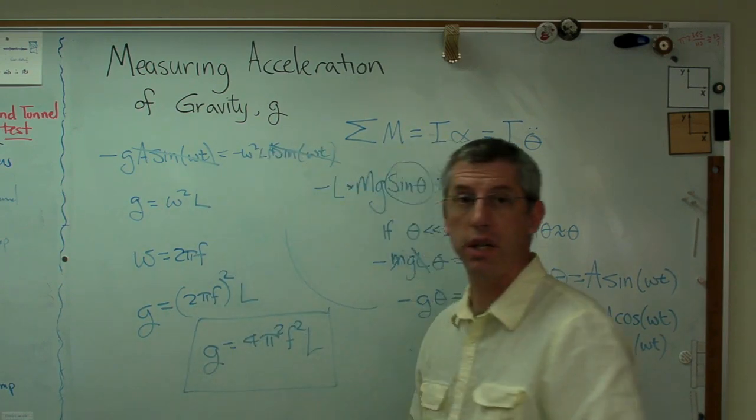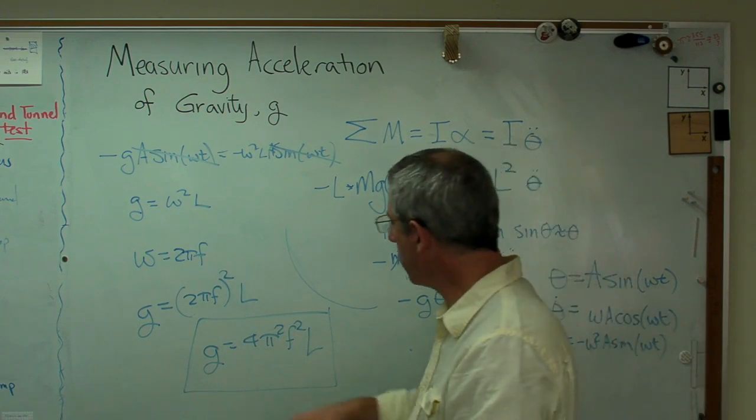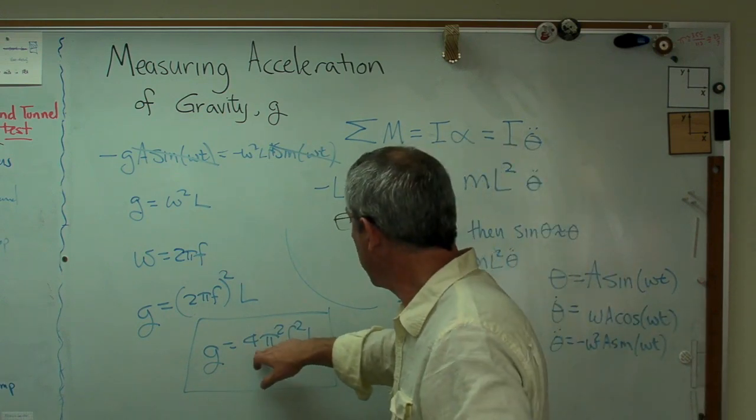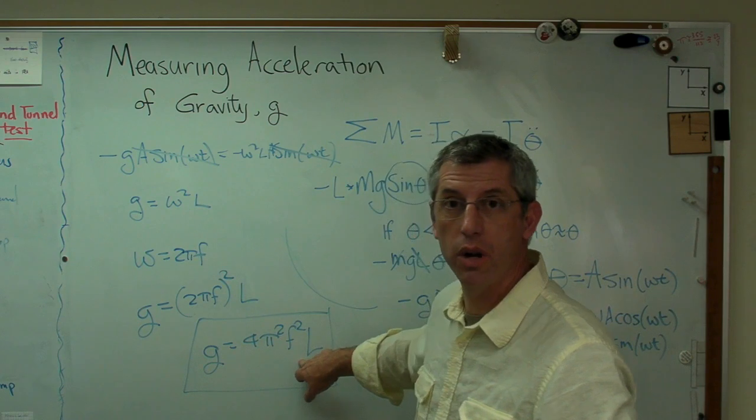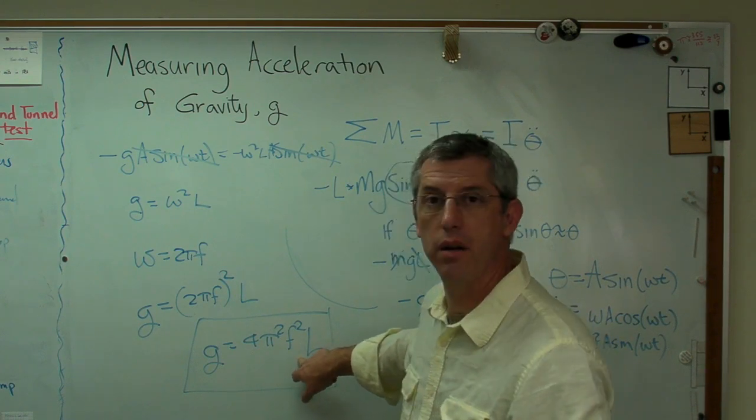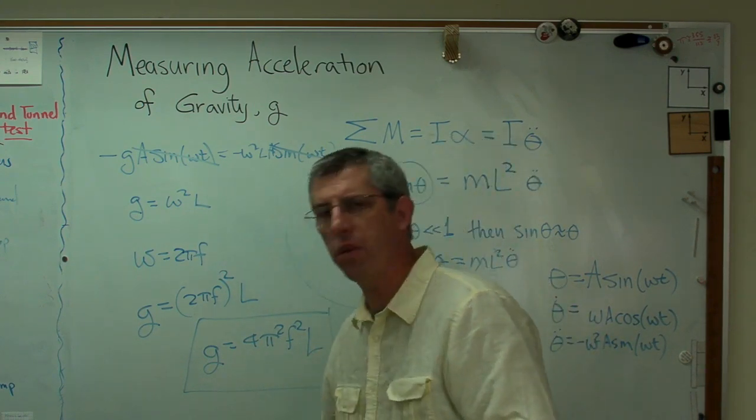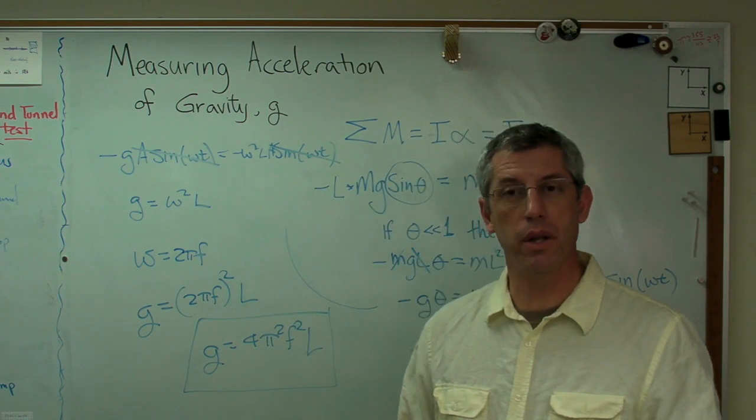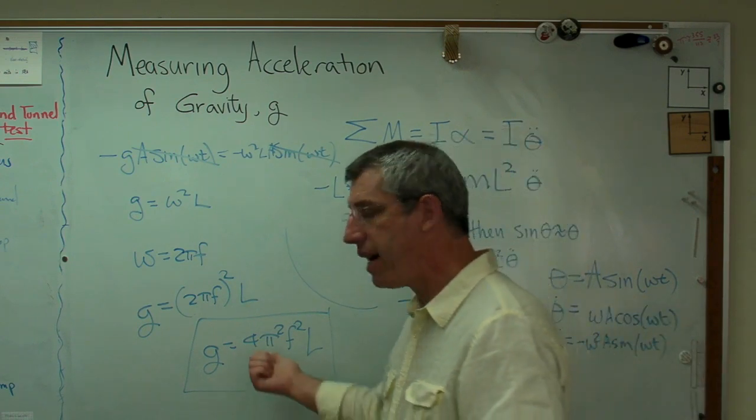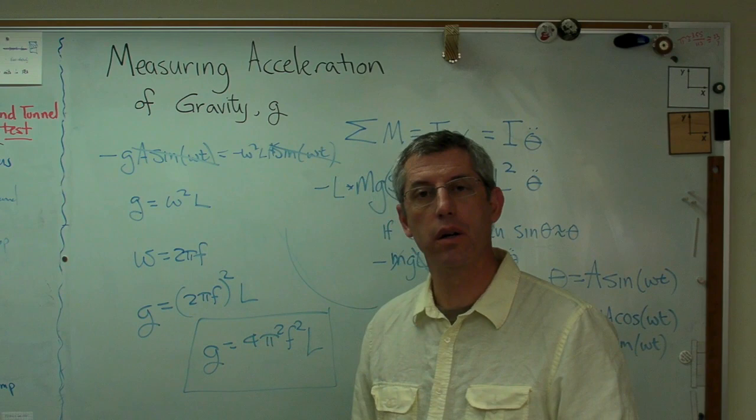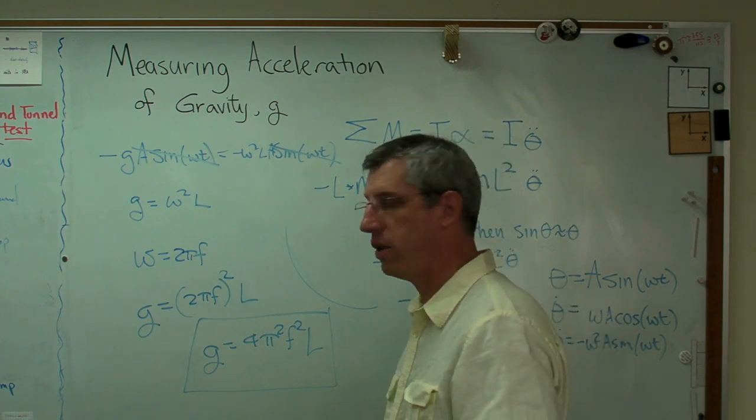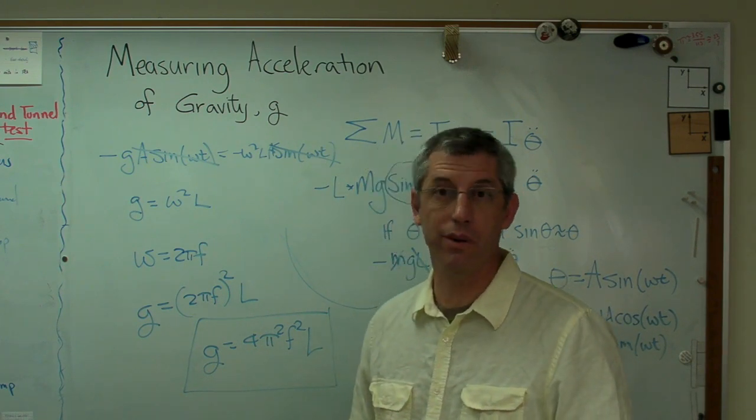I now have an expression where there's something I don't know on one side, that's G. And there's a bunch of stuff I either know or can measure easily on this side. Notice the one parameter that does not appear here? Mass isn't in there. It doesn't matter what the pendulum weighs. That's one less thing I've got to measure. I don't need to weigh the thing.